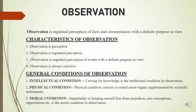If we analyze this definition of observation, we find certain characteristics of it. Number one: observation is perception. Observation involves perception. In perception, we obtain knowledge through our different sense organs such as eyes, ears, nose, etc. So, in case of observation, we have to perceive things.